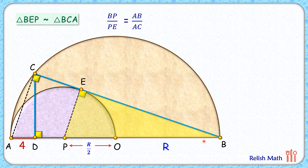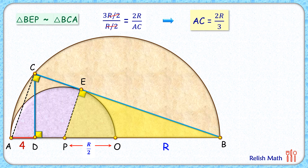Thus the ratio of corresponding sides will be equal. So we say BP upon EP equals BA upon CA. Putting in the values: BP is R + R/2 = 3R/2, and EP is the radius of the purple semicircle, which is R/2. So this gives 3R/2 upon R/2. AB is the diameter of the brown circle so that is 2R, and AC is what we want to find, giving 2R upon AC. Simplifying, R/2 cancels and we get AC = 2R/3.